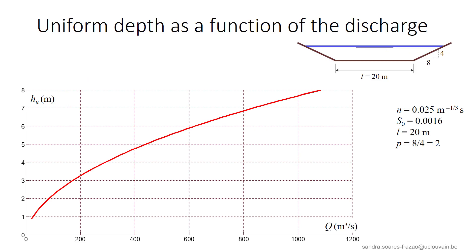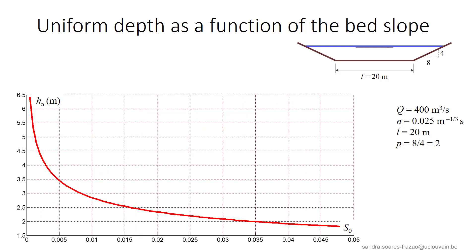Using this same example, we can represent the evolution of the uniform depth as a function of the discharge, or as a function of the bed slope. The flow depth decreases as the bed slope increases. We can also observe that the uniform depth tends to infinity when the bed slope approaches zero, meaning that the uniform depth does not exist in a horizontal channel. This is logical: the uniform flow results from an equilibrium between the gravitational acceleration due to the bed slope and the friction forces, so if there is no slope, there is no acceleration and no uniform flow.